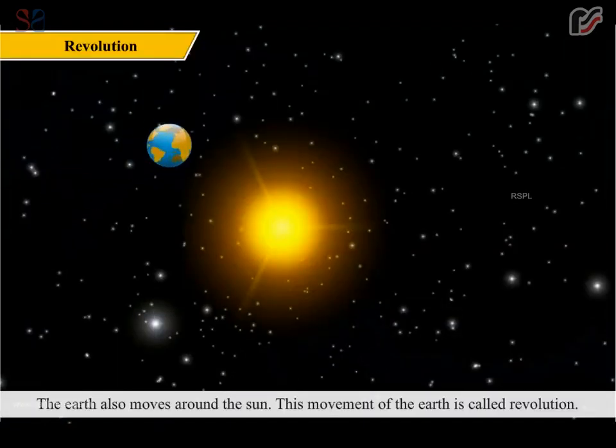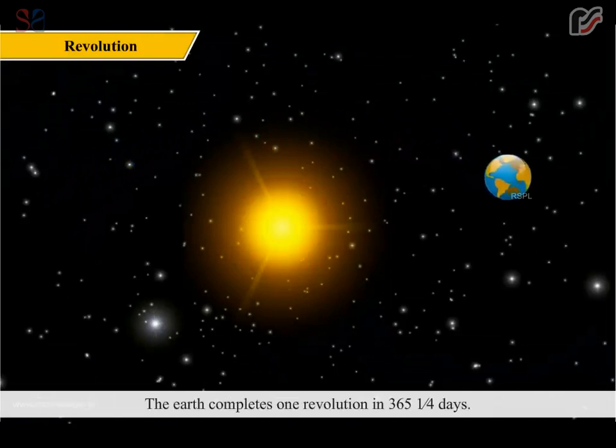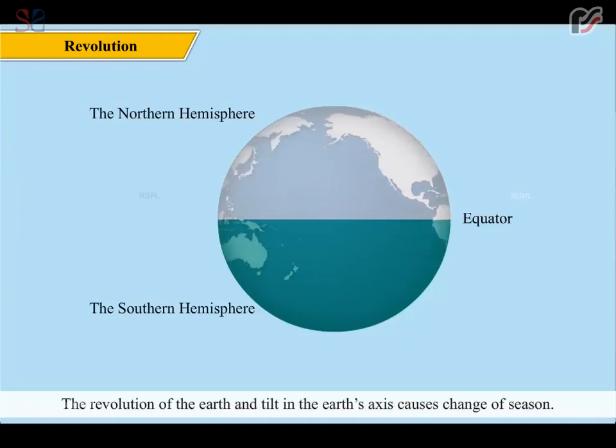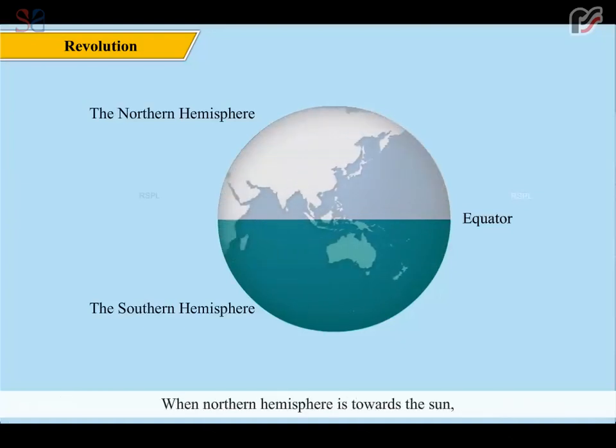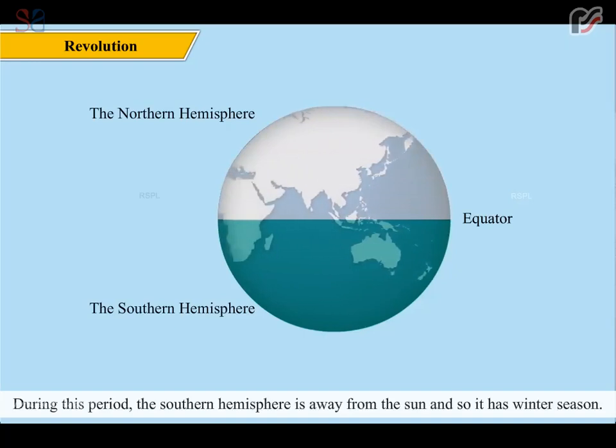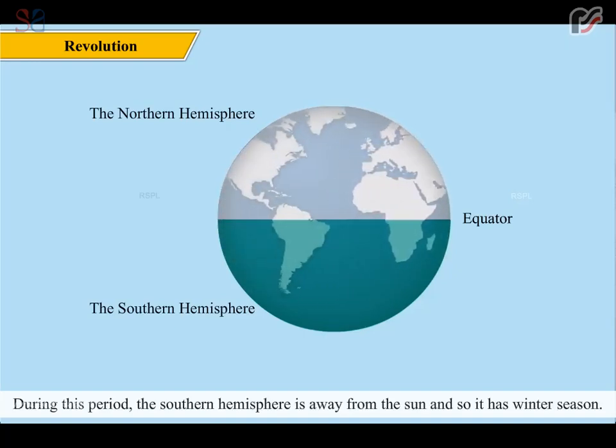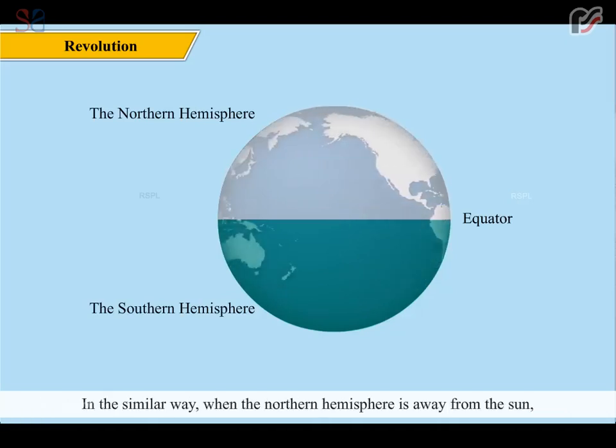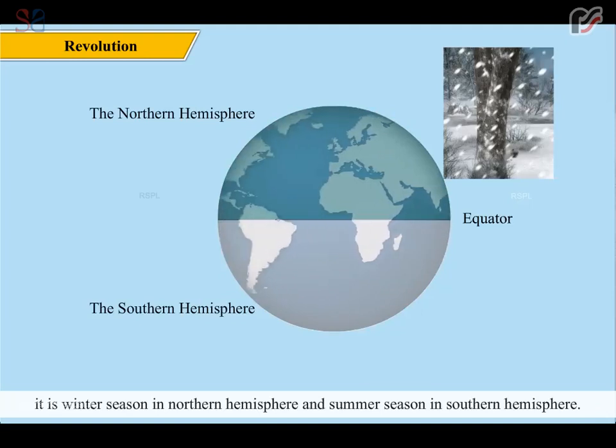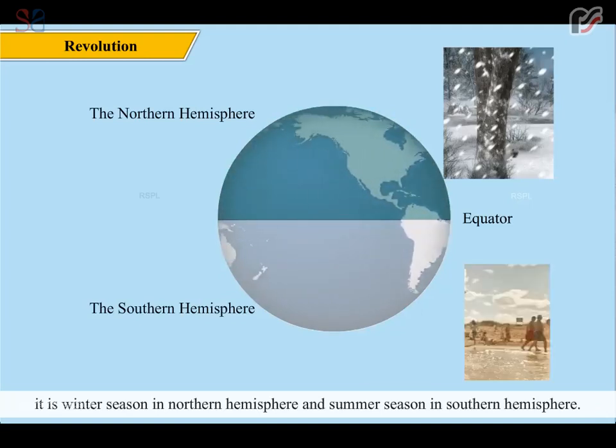The Earth also moves around the Sun. This movement of the Earth is called revolution. The Earth completes one revolution in 365 and one-fourth days. The revolution of the Earth and tilt in the Earth's axis causes change of seasons. When the northern hemisphere is towards the Sun, it receives more sunlight, therefore it has summer season. During this period, the southern hemisphere is away from the Sun, and so it has winter season. In a similar way, when the northern hemisphere is away from the Sun, it is winter season in the northern hemisphere and summer season in the southern hemisphere.